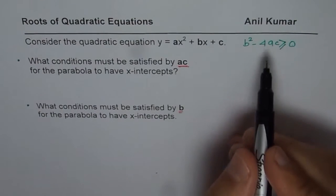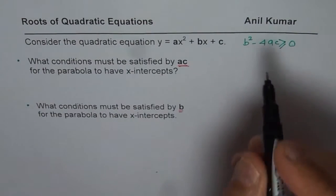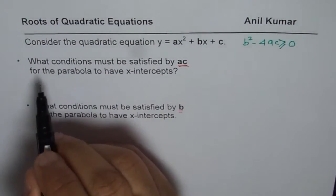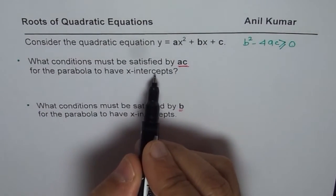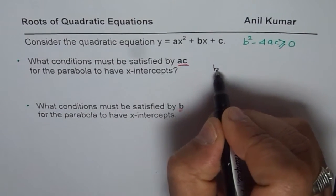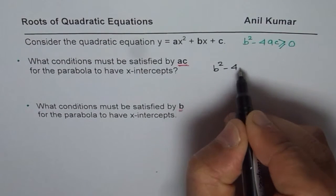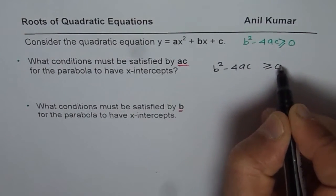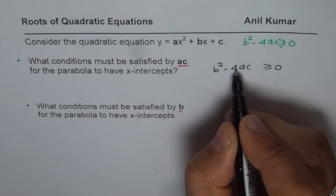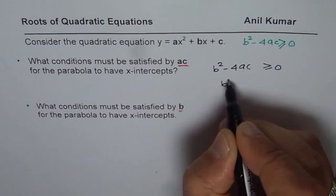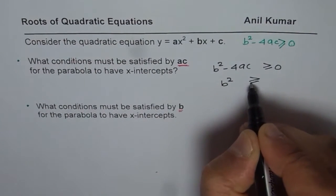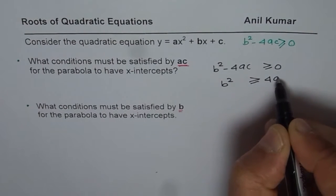Now let's try to isolate ac. If we want x-intercepts, that means we know b square minus 4ac should be greater than or equal to 0. If I want to solve it, I'll take ac to the other side, so we get b square is greater than or equal to 4ac.